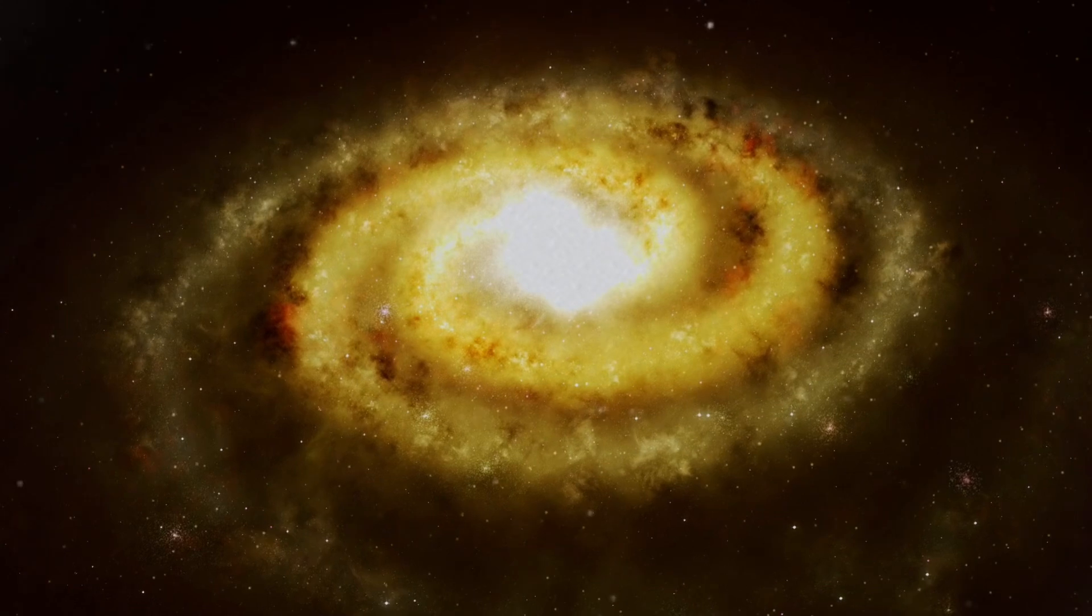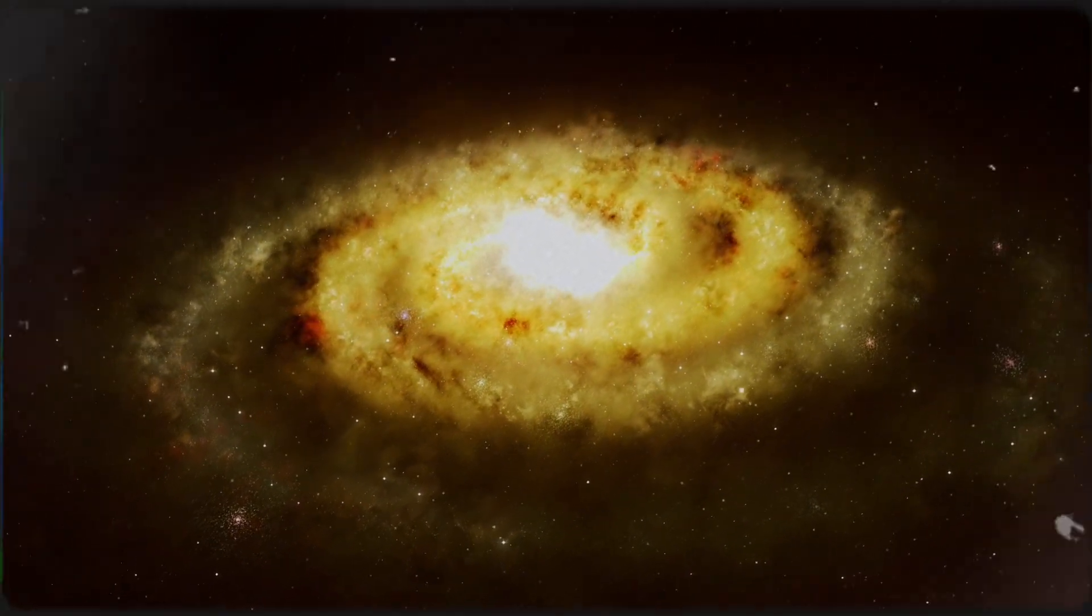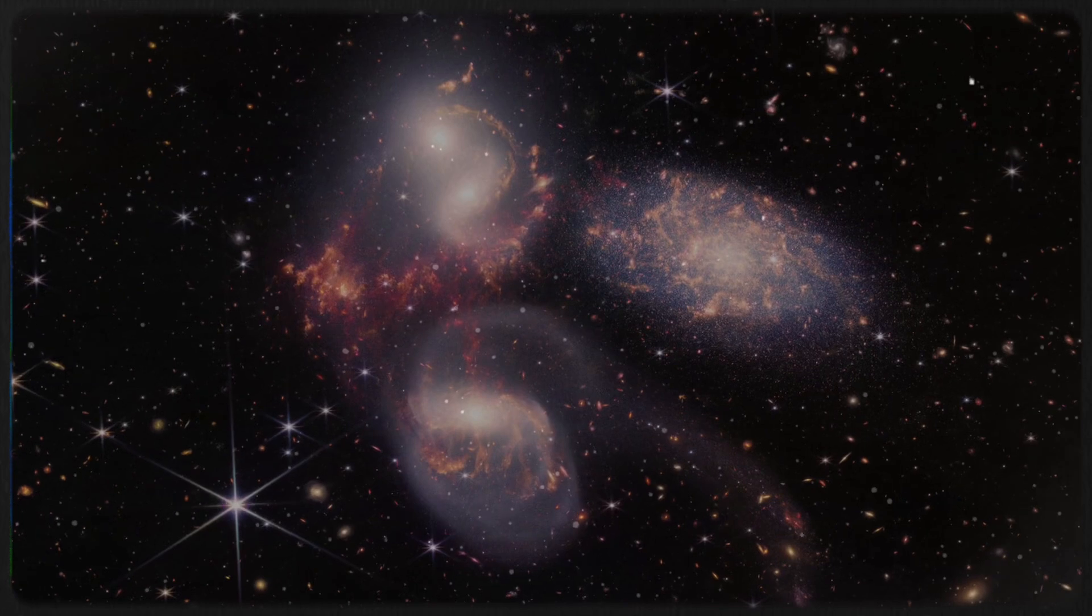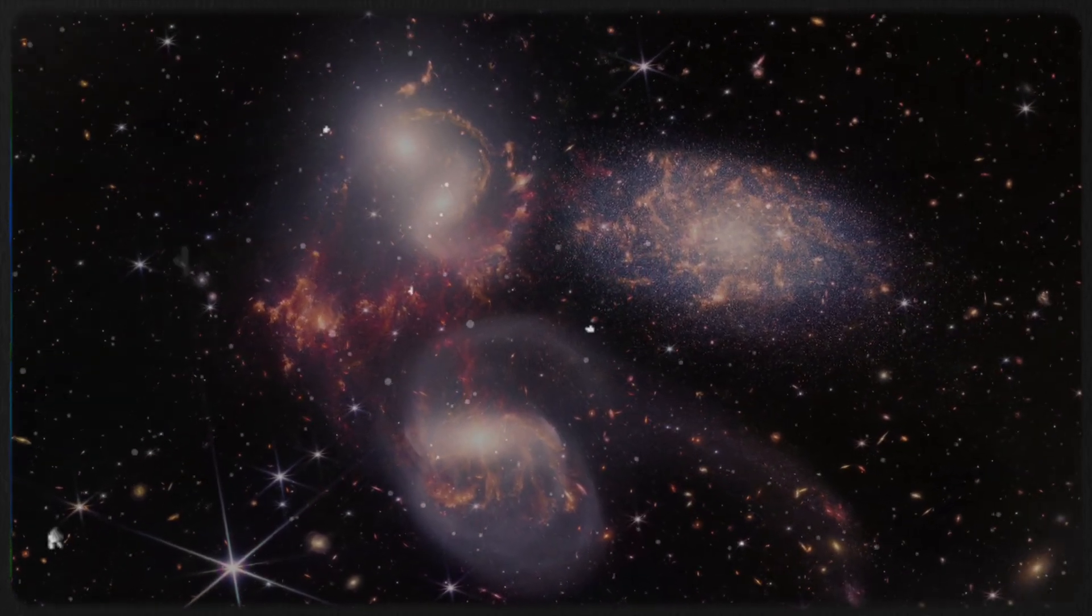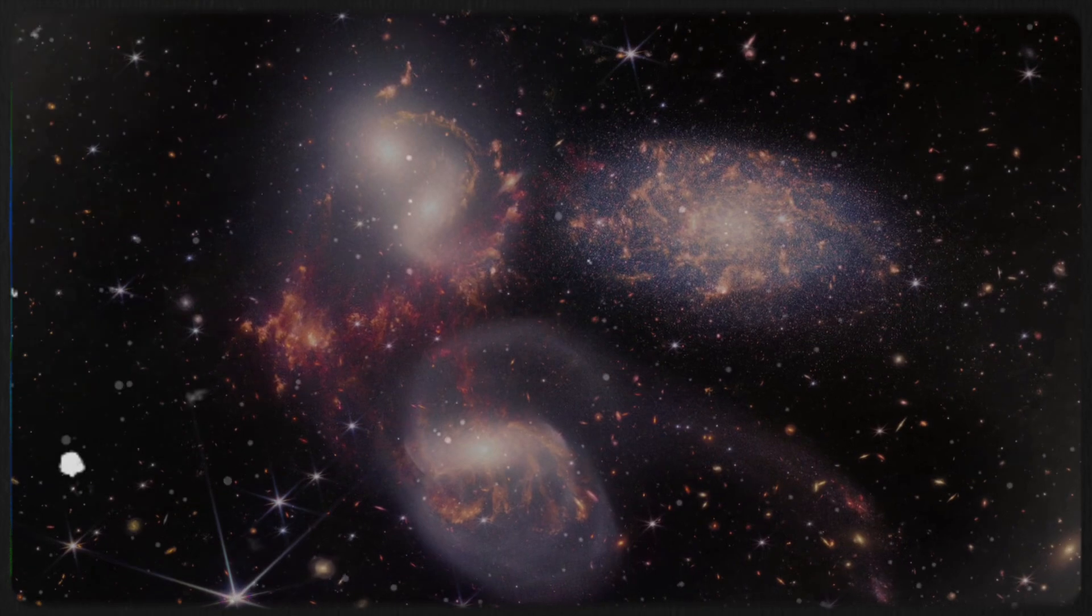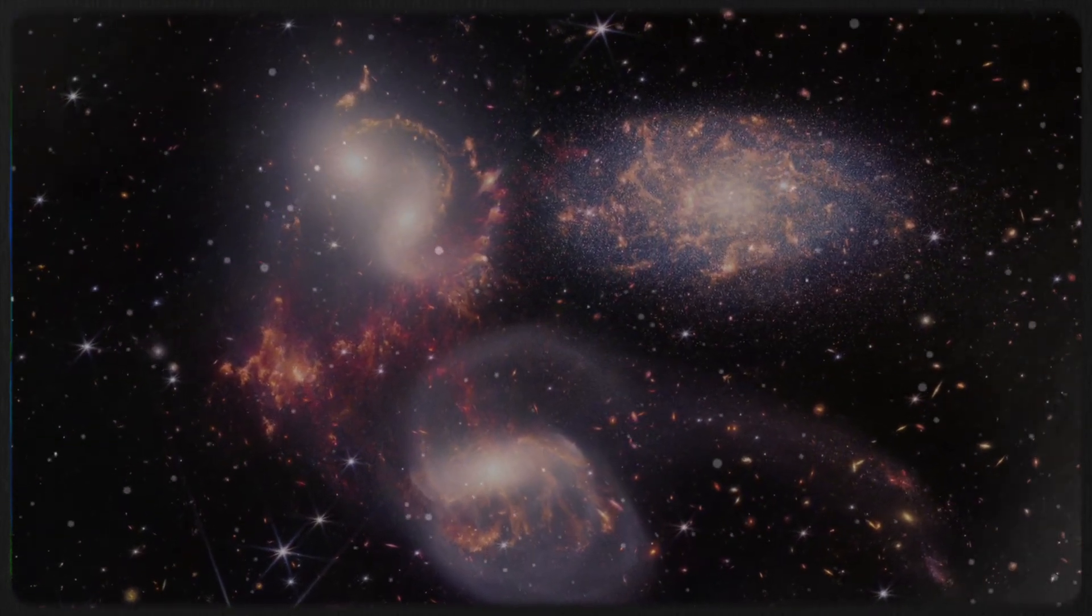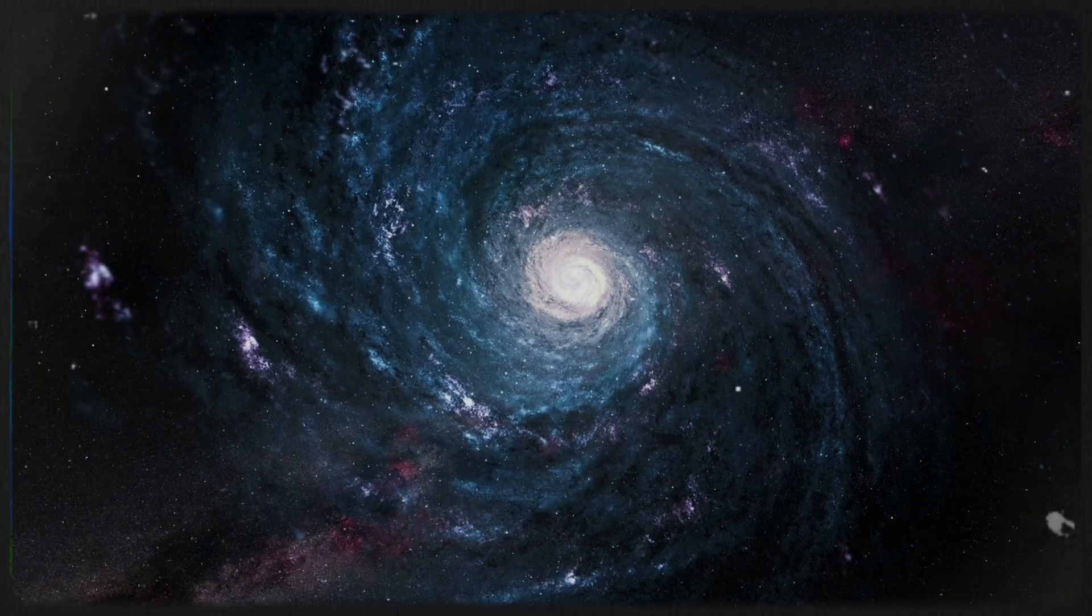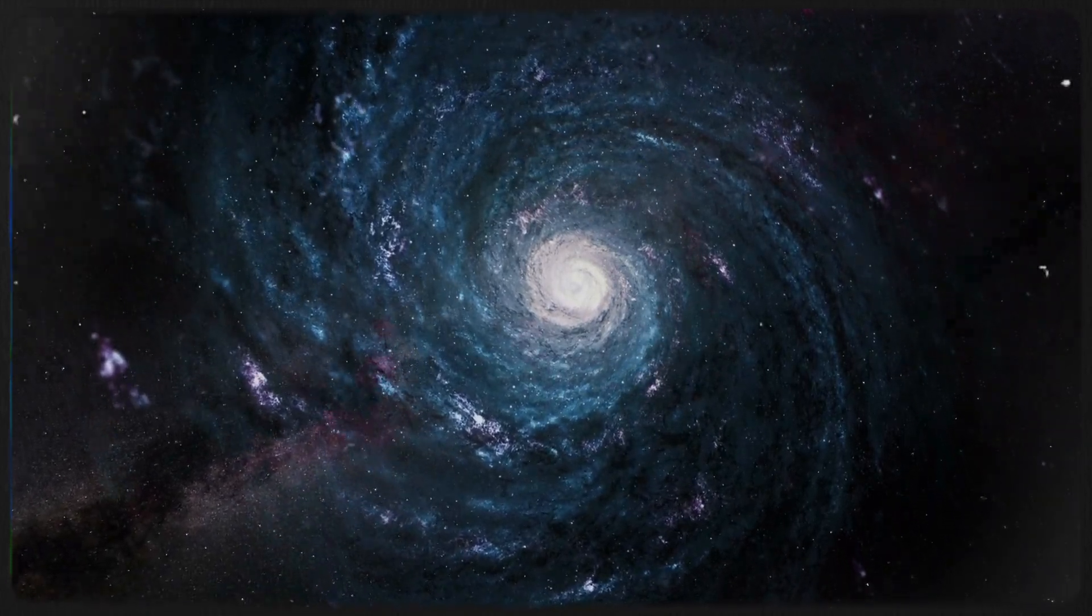Professor Lior Shamir has pointed out a striking imbalance in the way galaxies spin, with as much as 50% more galaxies rotating in one direction than the other. What's fascinating is that this asymmetry is so pronounced, even someone without a science background could spot it just by glancing at the images. Shamir believes this odd pattern might be more than coincidence. It could mean that the universe was born with a spin, like a cosmic top set in motion from the very beginning.